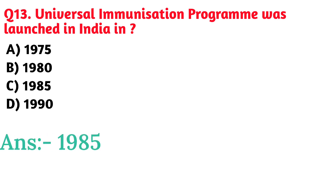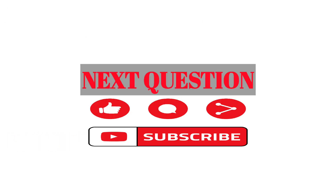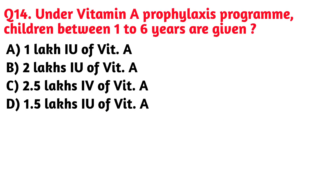Next question: Universal immunization program was launched in India in. Option C. 1985 is the correct answer.